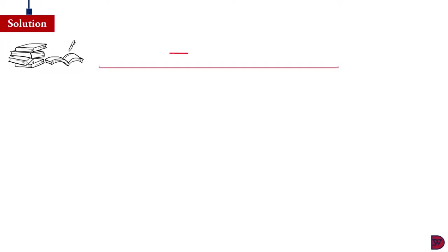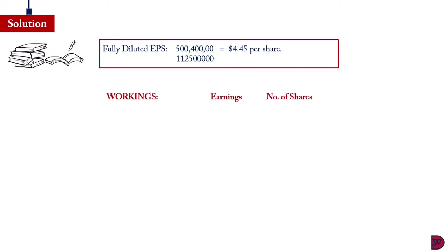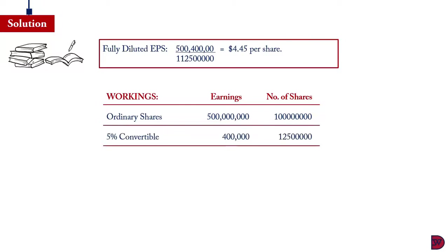When we come to the fully diluted earnings per share, it's going to give us an amount of $4.45. When we look at the workings down here, for the ordinary share which was already in issue, the earnings or the net profit was $500 million. The number of shares in existence was 100 million. Then there was a 5% convertible into shares. The value earned at $400,000 and it led to the number of shares of 12.5 million shares. When we come to the share option, there was no savings, so it's zero but there was 3,750,000 shares. When you sum them, the total earnings will be $500,400,000 and the total number of shares will be 116,250,000.